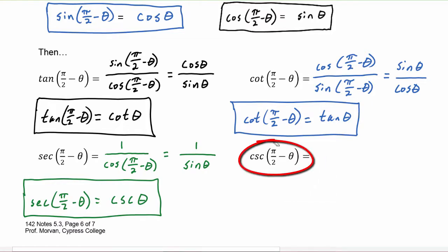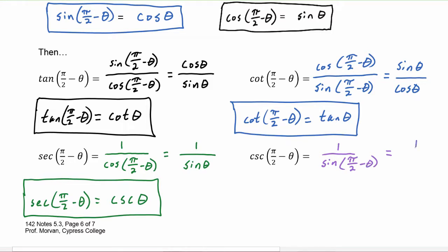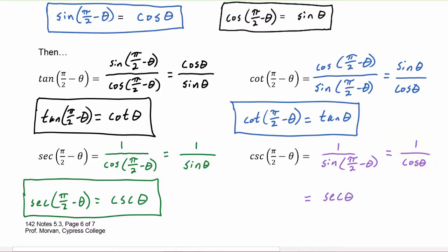Finally, cosecant of pi over two minus theta is equal to one divided by the sine of pi over two minus theta. Using the identity, we know this turns into one over cosine theta, because sine of pi over two minus theta is replaced with cosine theta. One over cosine theta becomes secant theta, so we've just proved that the cosecant of pi over two minus theta is going to equal secant theta.